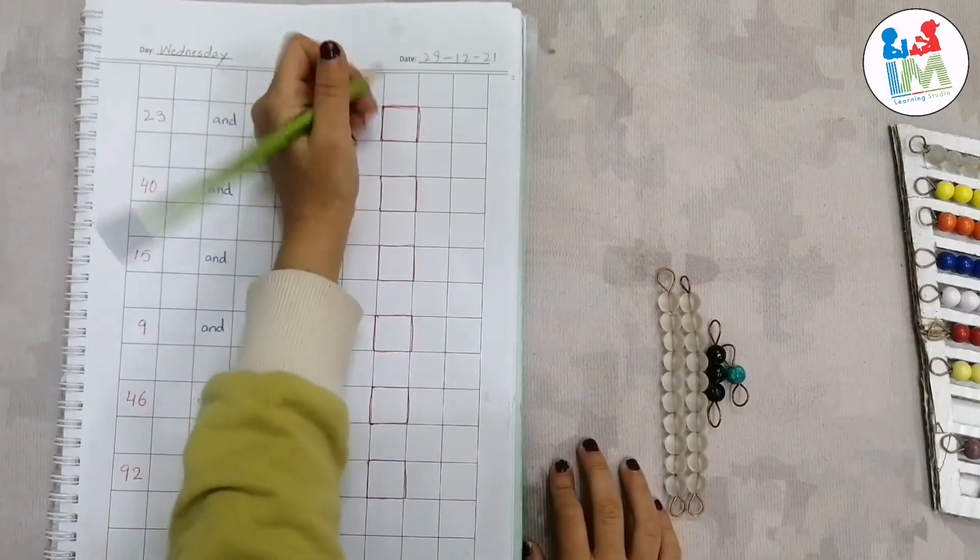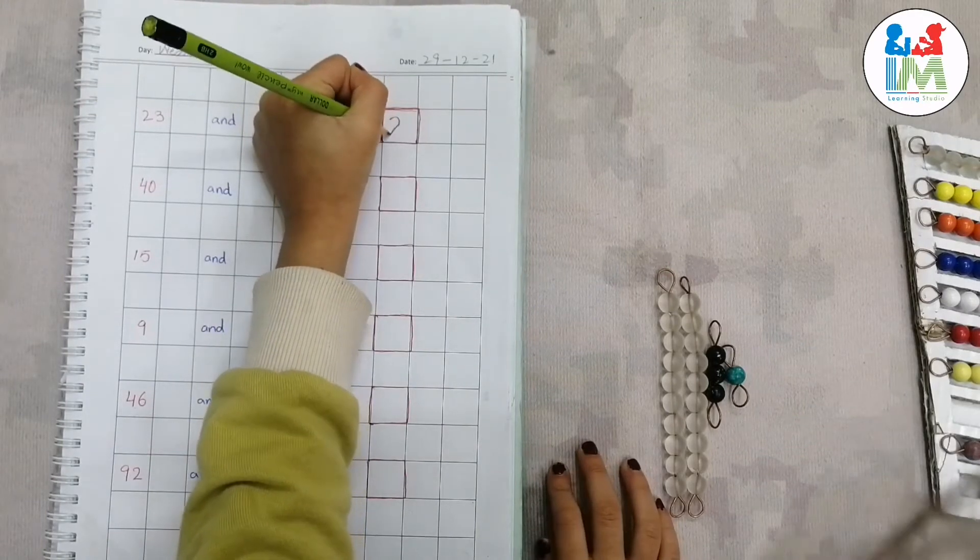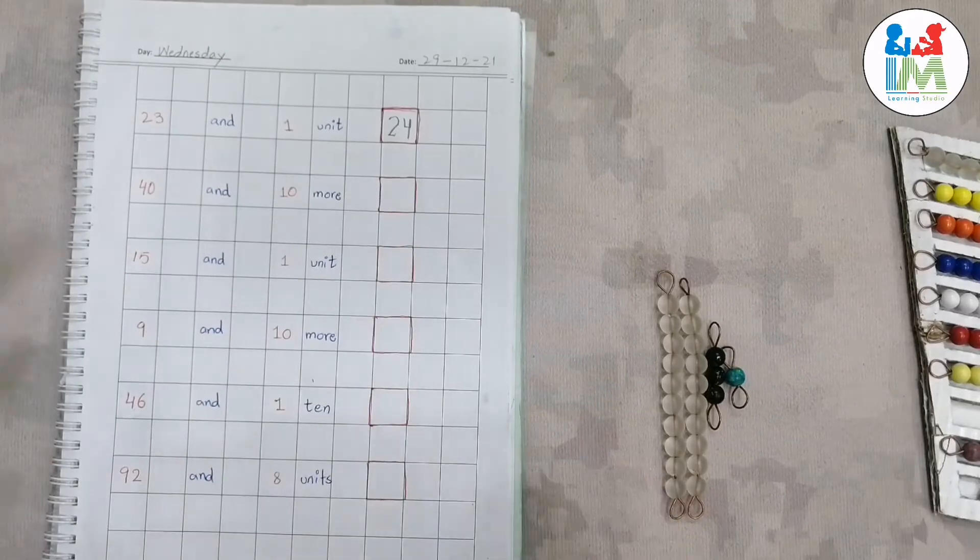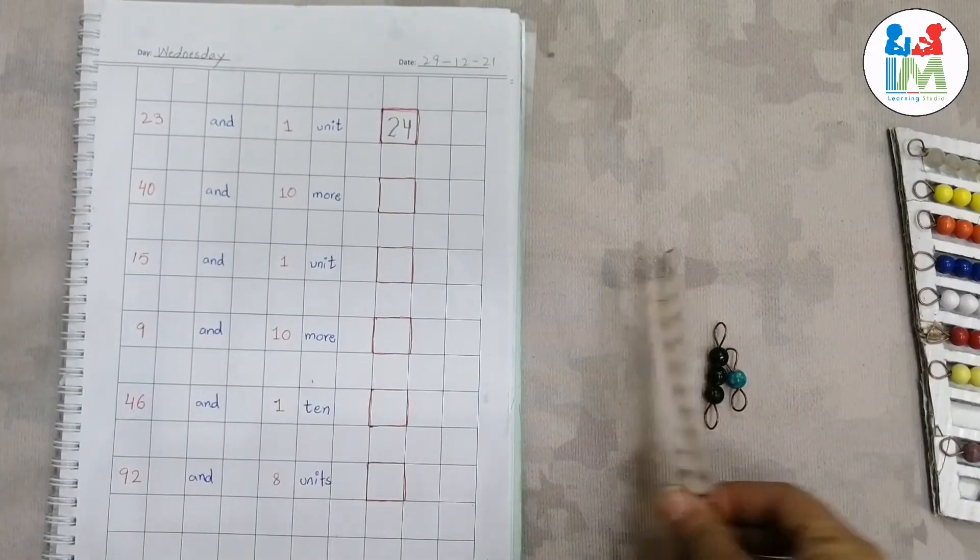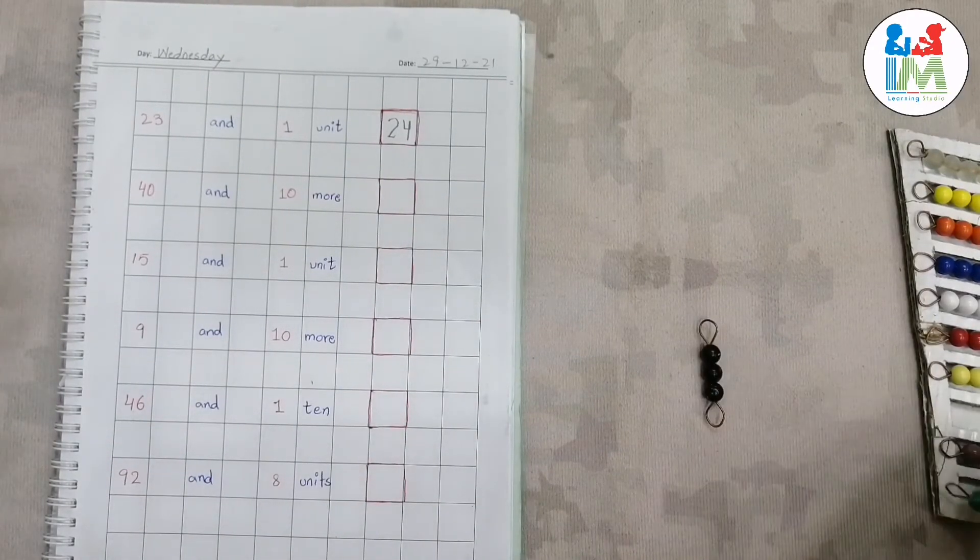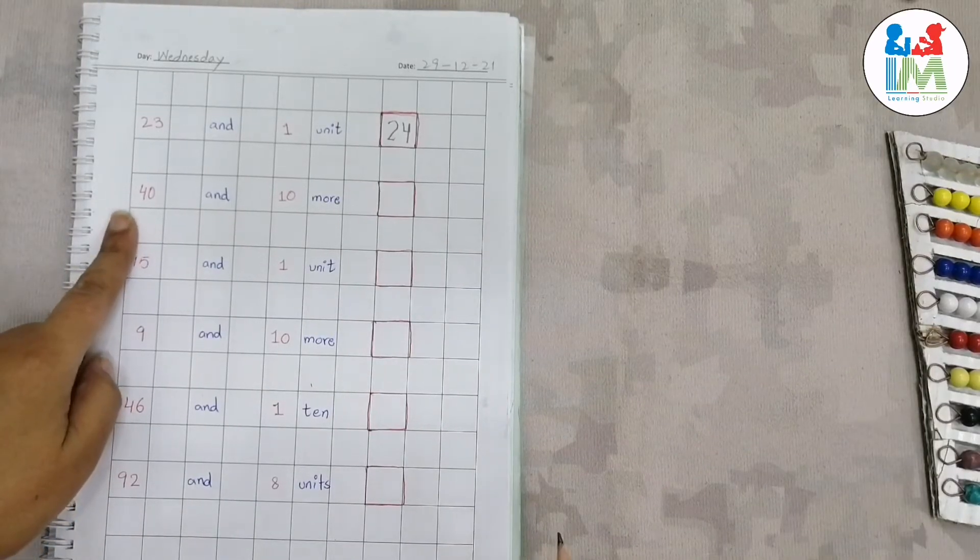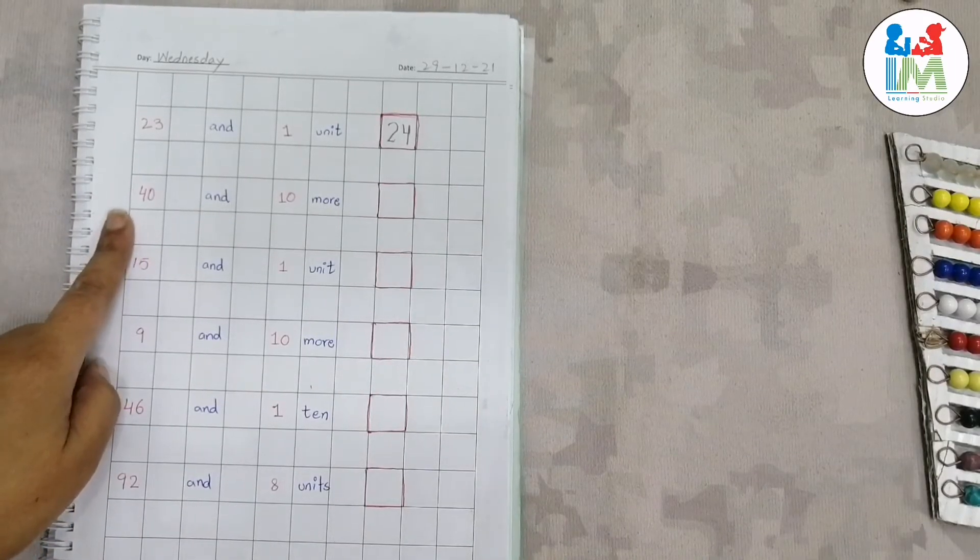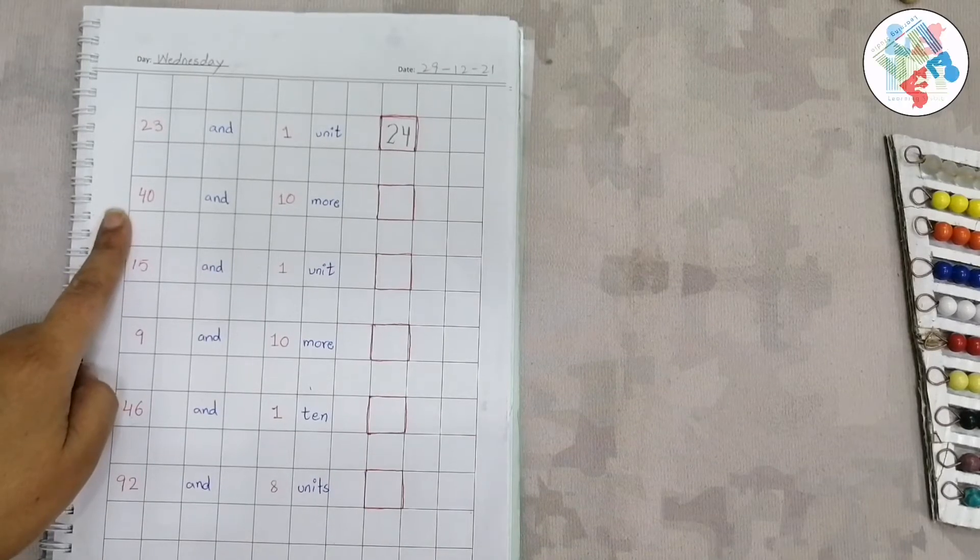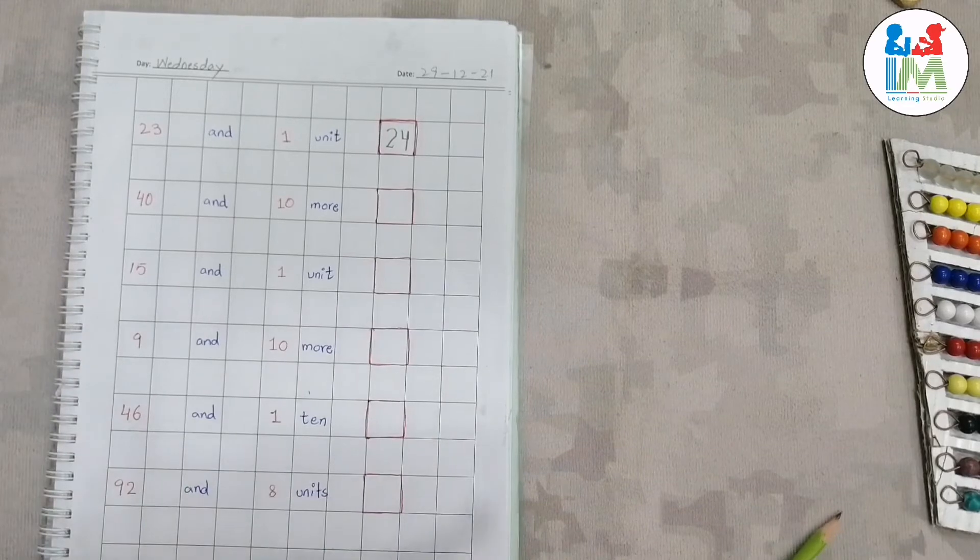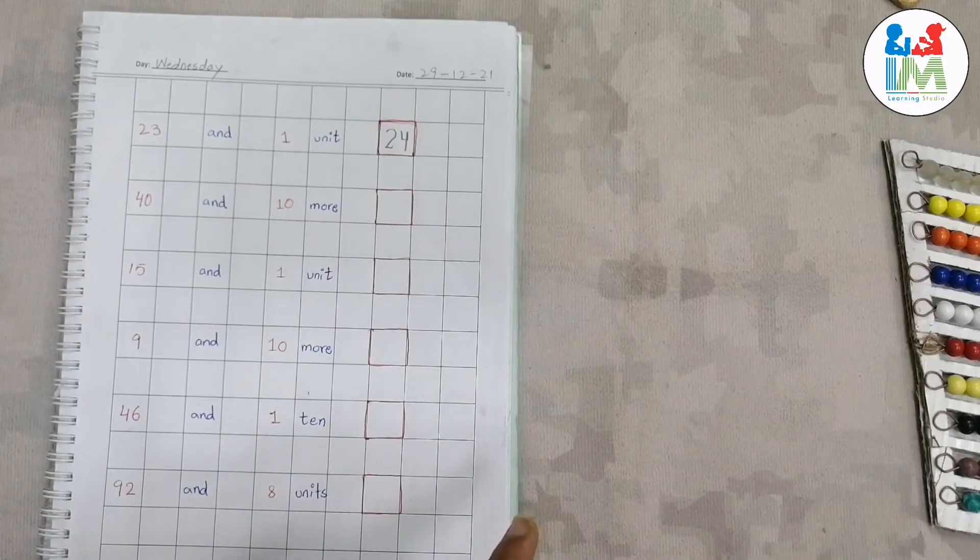Okay, now place all these beads back. Okay, what number next? 40. 40, how many tens in 40? Four. Four tens. And how many units? Zero units. Can you make 40 number with these beads?